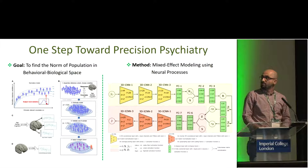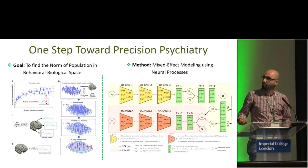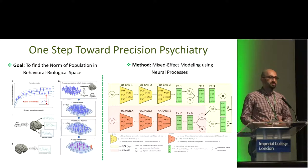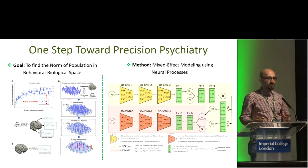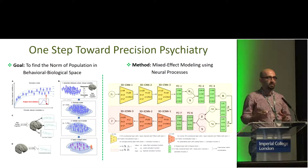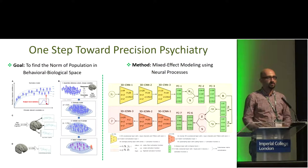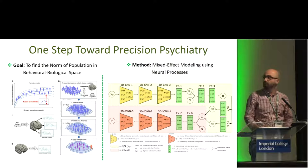Once we have this model of the norm of the population — the model of the healthy population — any large deviation from this norm can be considered as an anomaly and can be studied in relation to mental disorders.